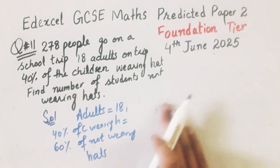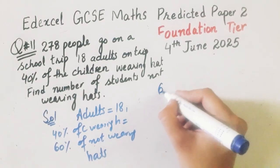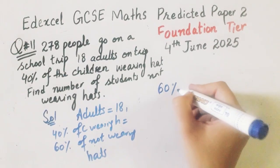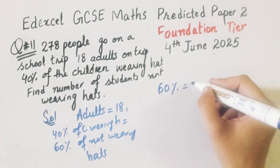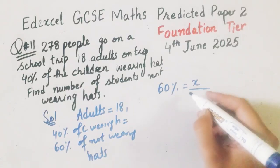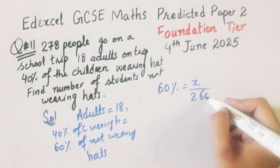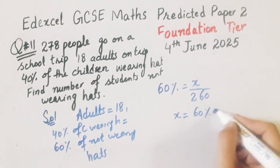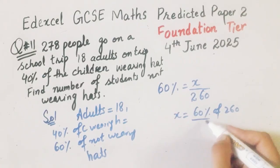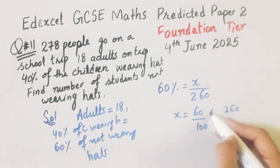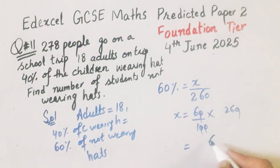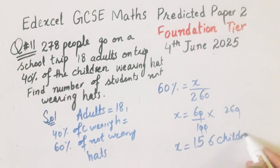We will solve this: 60% is equal to the let's expose not wearing hats divided by total number of students that are 260. So we will multiply 60% by 260 — percent can be represented by dividing by 100 and 'of' represents multiplication. The zeros cancel out, so 26 multiply 6 is 156. So 156 children are those who are not wearing hats.